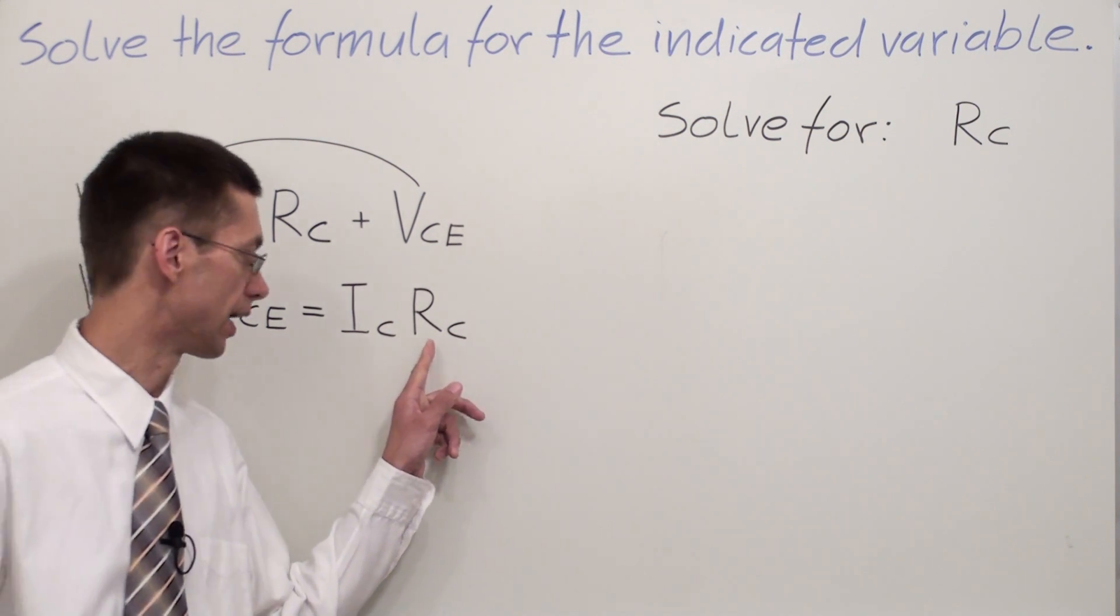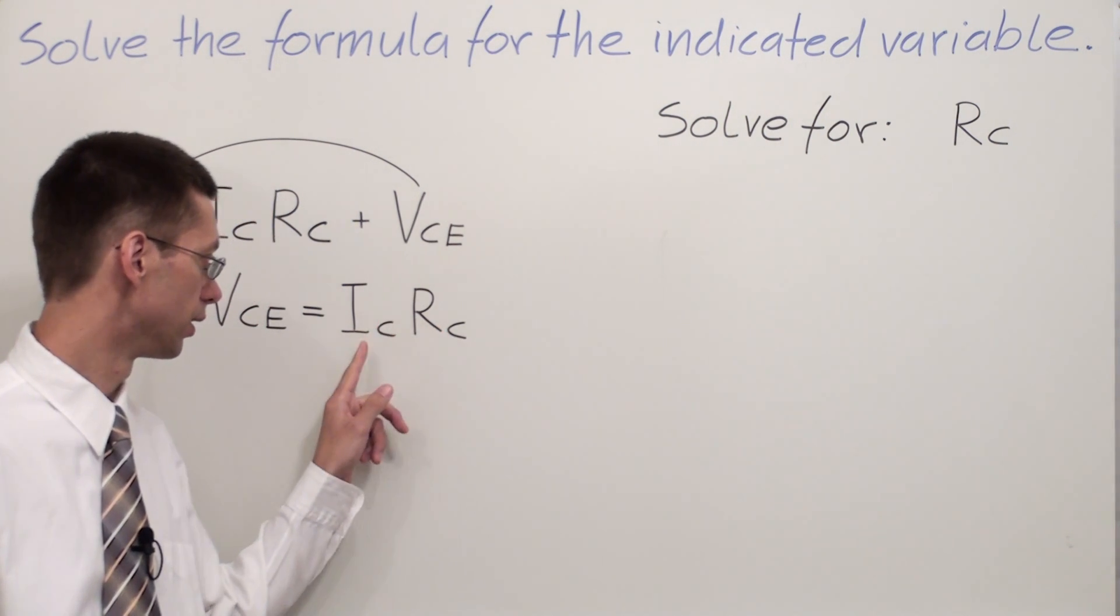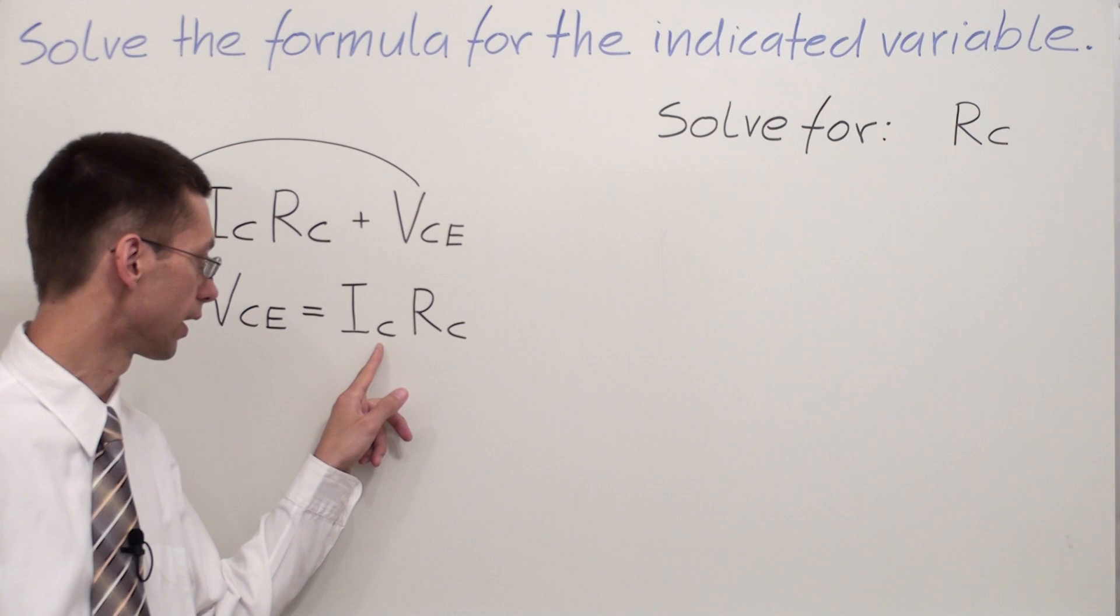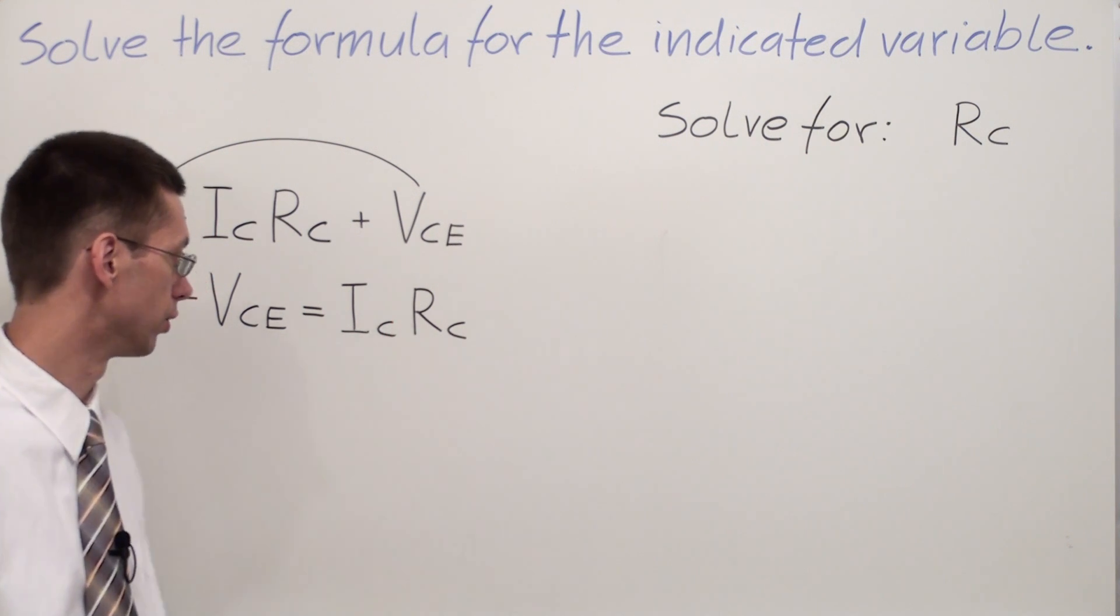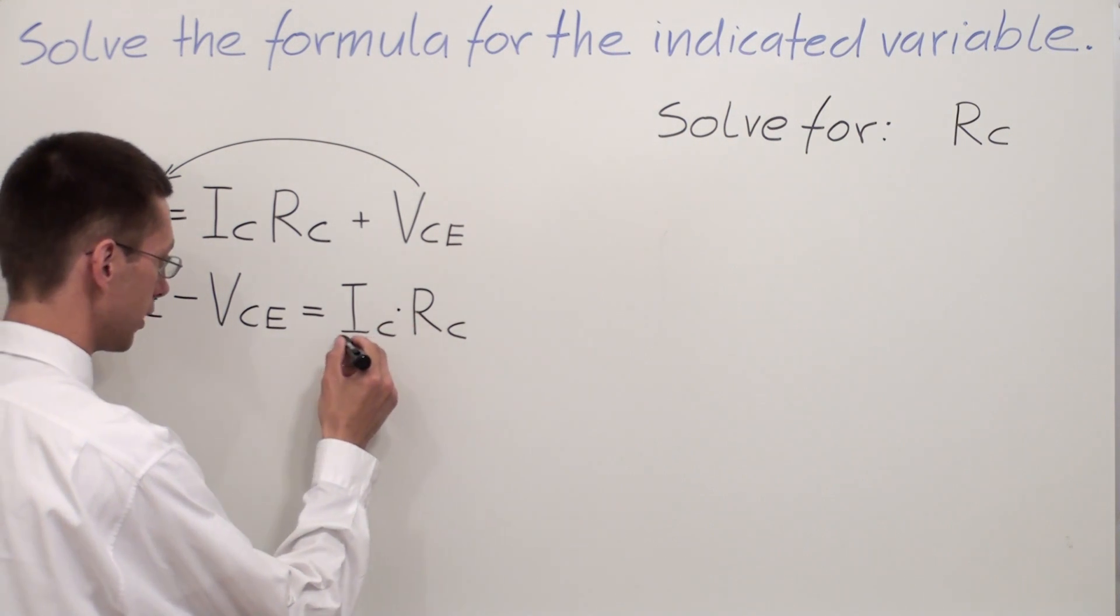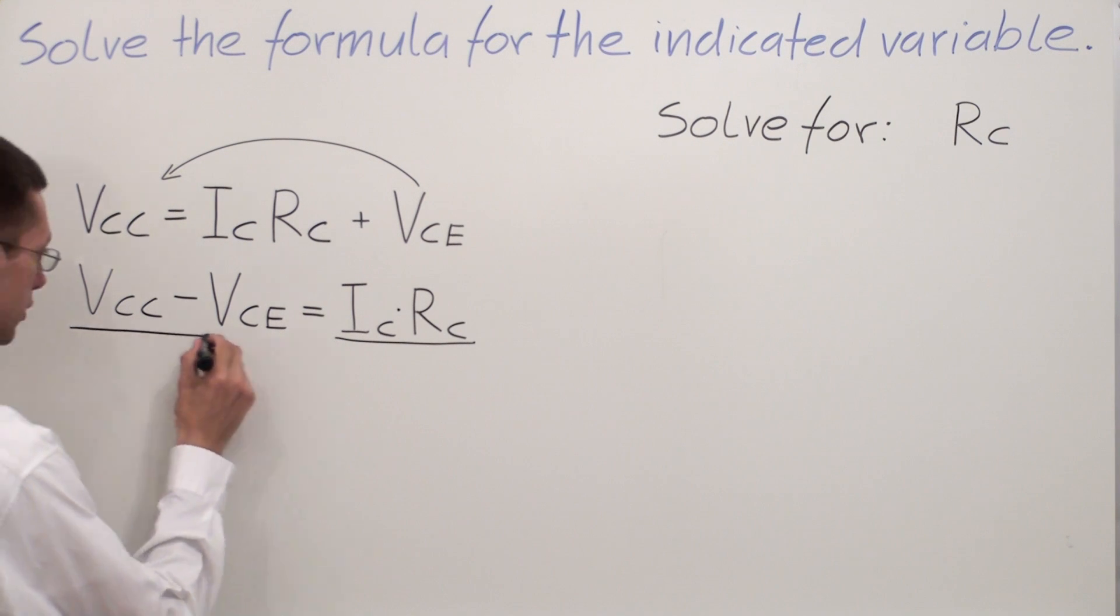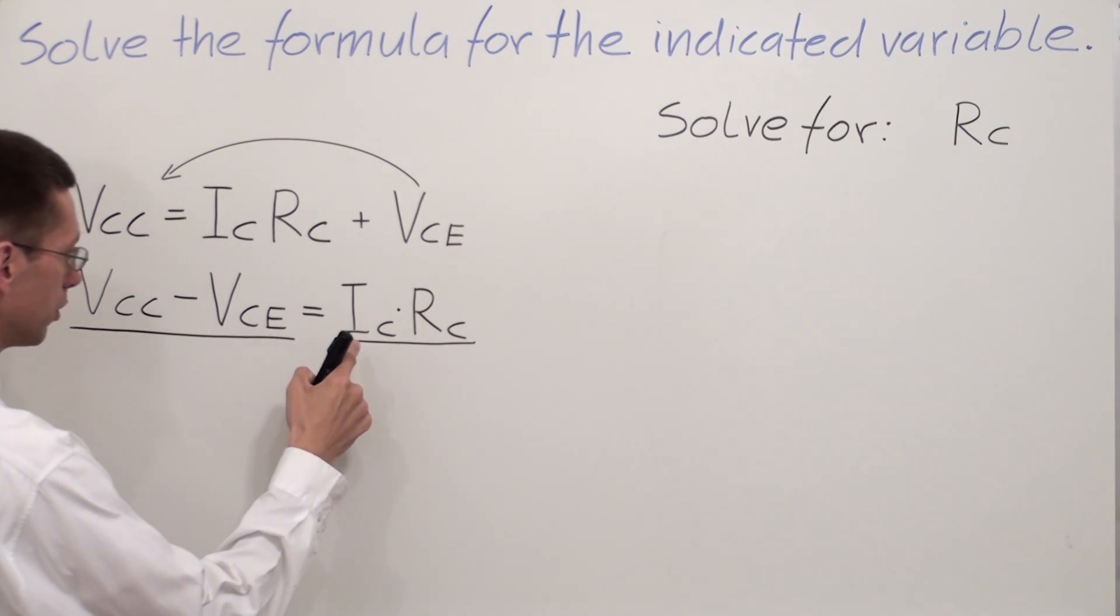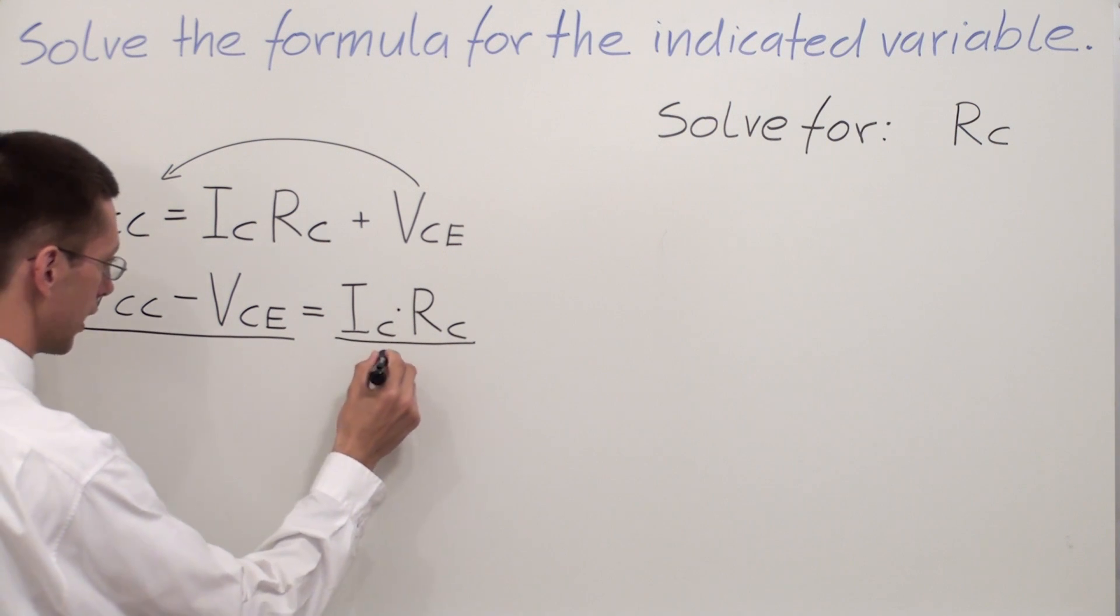I'm looking for RC. My RC, as we said before, is multiplied to IC. I do not want to have IC next to RC. So I have to eliminate multiplication by dividing both sides of the equation by the variable which is next to RC. In this case, I have IC.